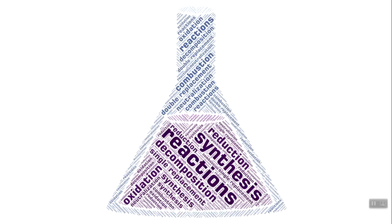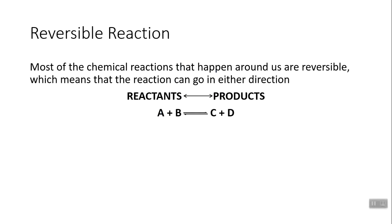Most of these chemical reactions are actually reversible. When I say reversible reaction, I'm talking about reactions that can go in either direction — from reactant to product, or product going back to reactant. You know it's a reversible reaction because you'll see a double arrow, which might look like two half arrows, one pointing right and one pointing left.